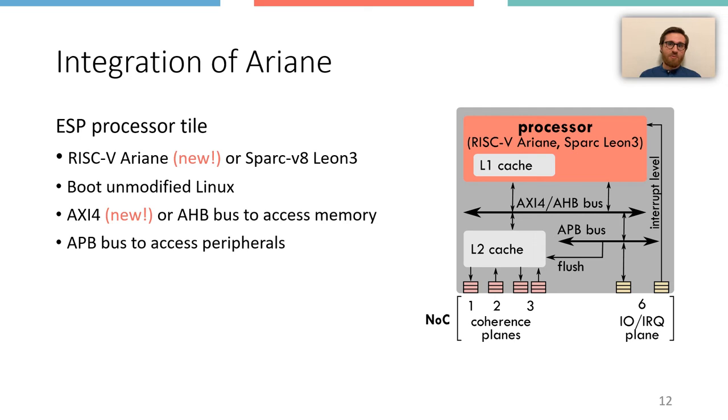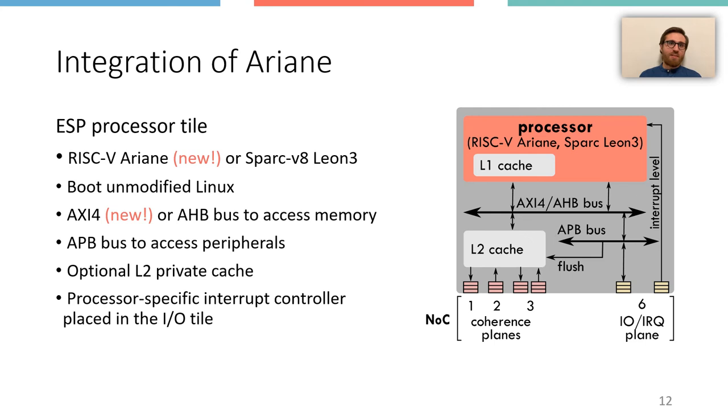The ESP processor tile follows the same flexibility and decoupling principles of the accelerator tile. The socket contains adapters for standard ARM bus protocols, as well as some other services like the ESP level 2 private cache, which implements a directory-based MESI protocol. Since each processor comes with a custom implementation of a couple of components like the interrupt controller, integrating different third-party processor cores cannot be automated.